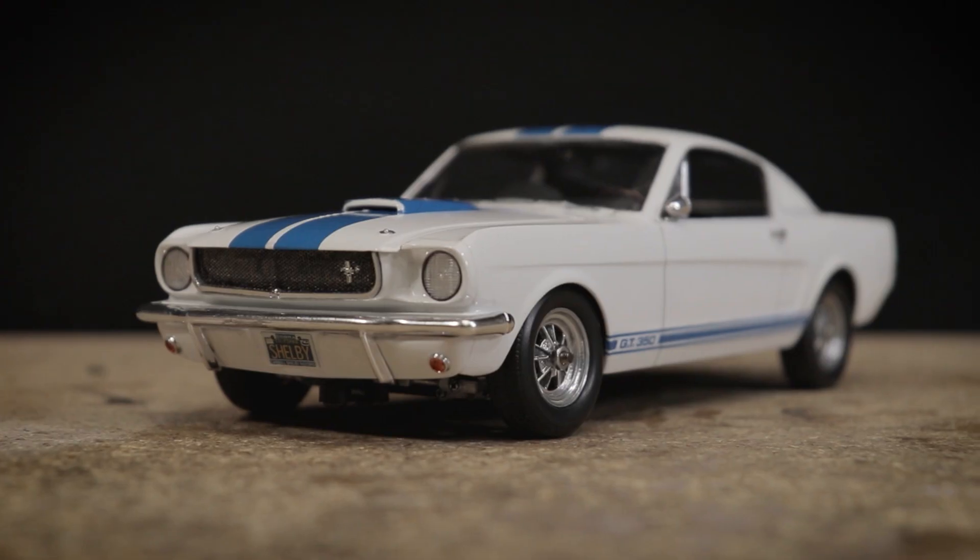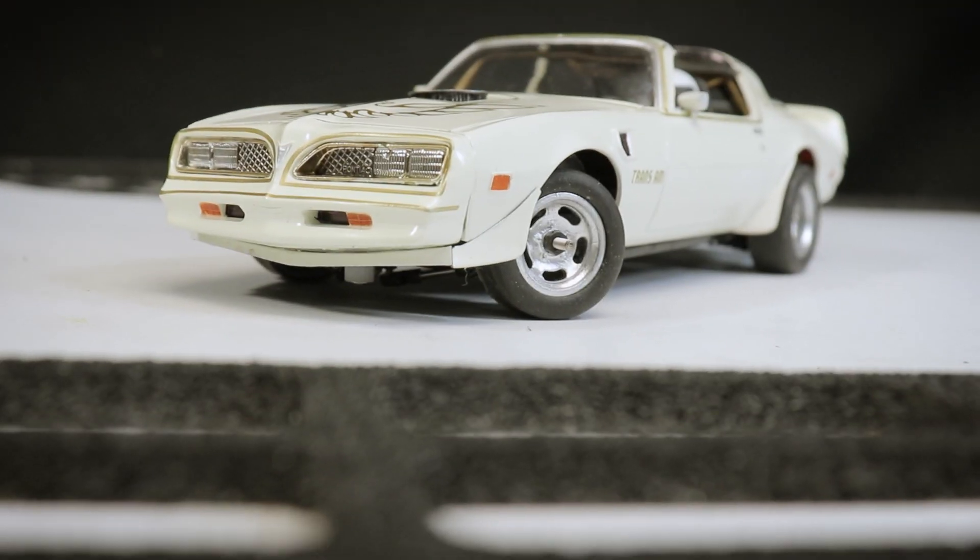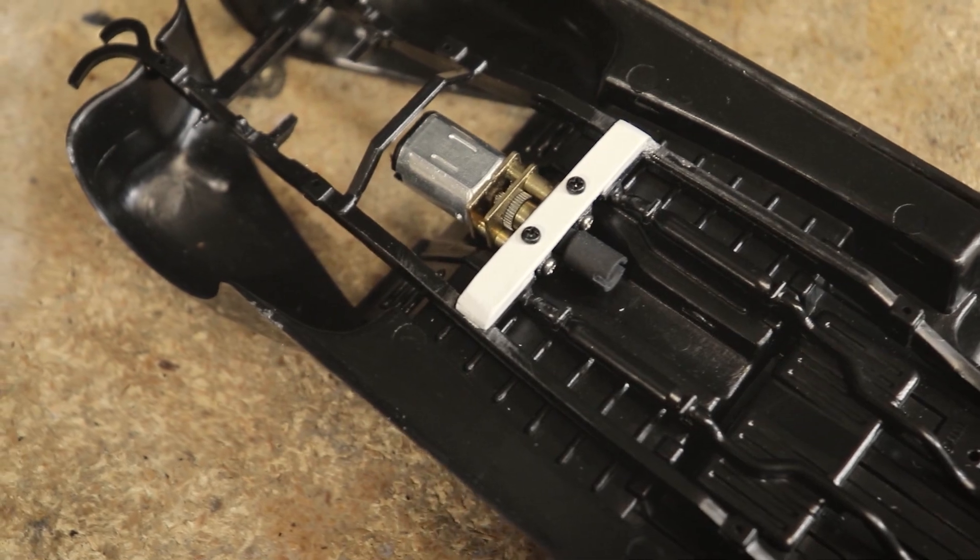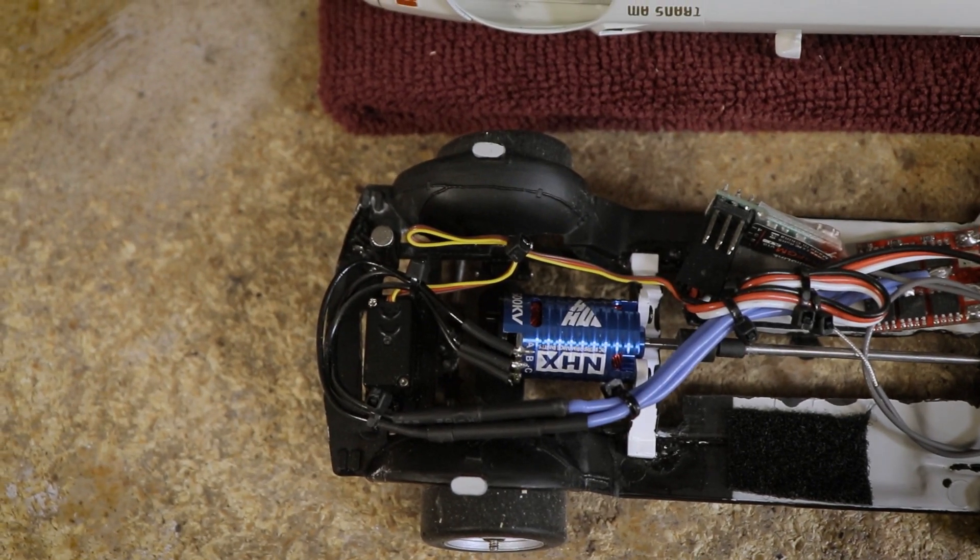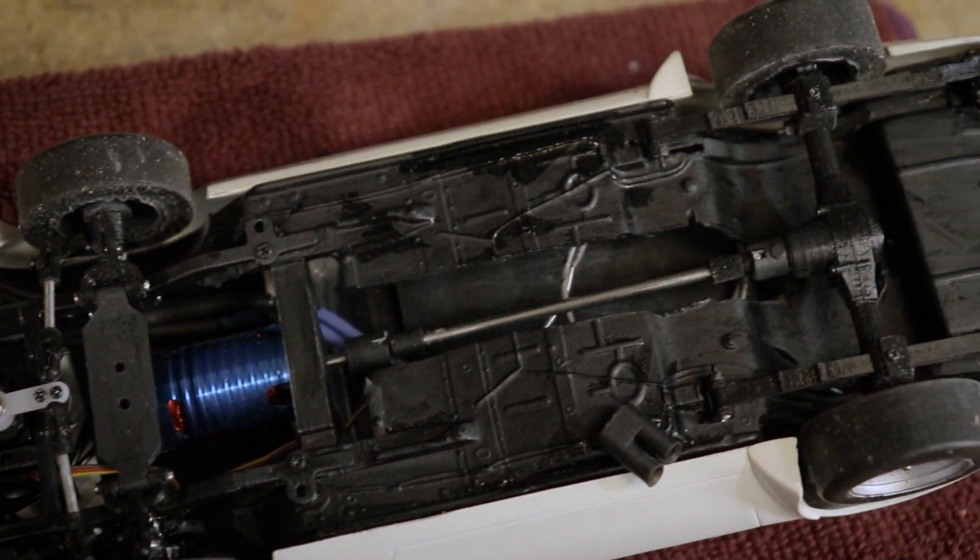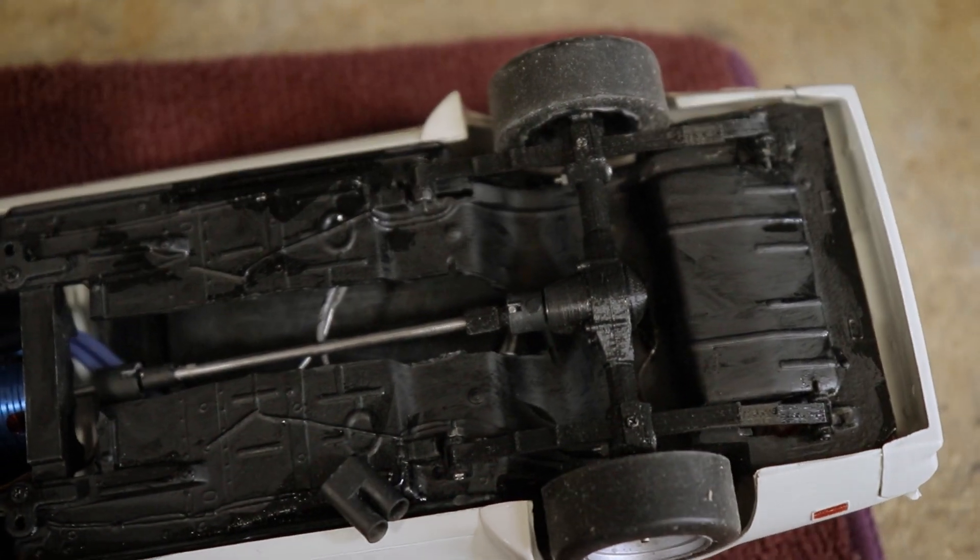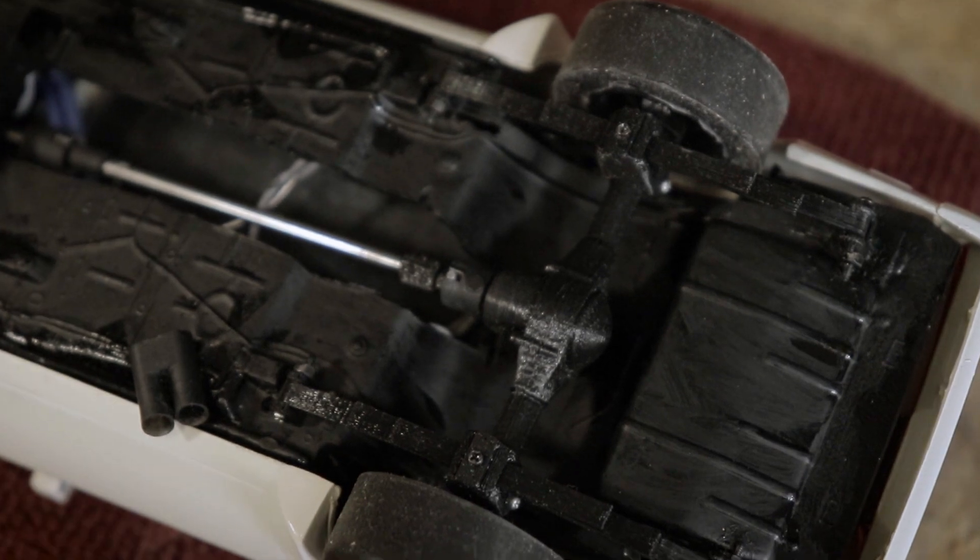While I've showcased some pretty cool model car to RC conversions on this channel, what really sets this one apart is rather than using a much more sensible micro brushed motor like this one here, I've instead installed a relatively massive brushless motor. That in and of itself is not that wild, but I've maintained a more lifelike longitudinal motor arrangement with power sent through a center drive shaft into a solid axle rear end.